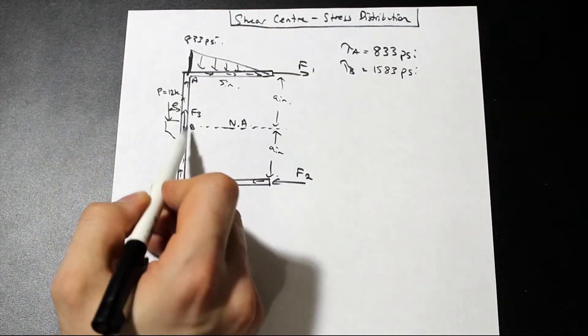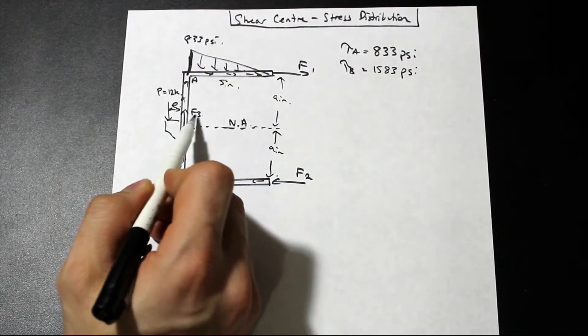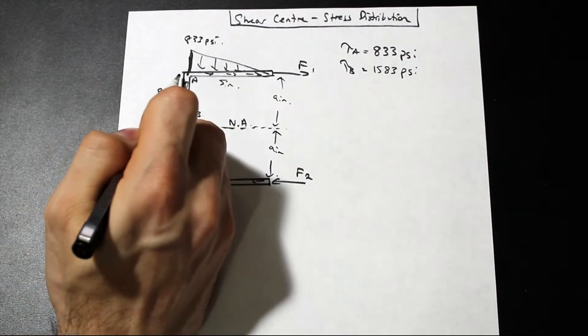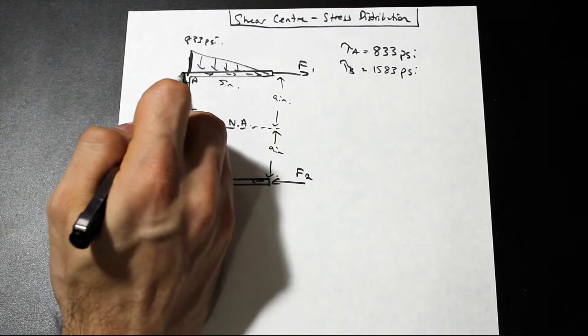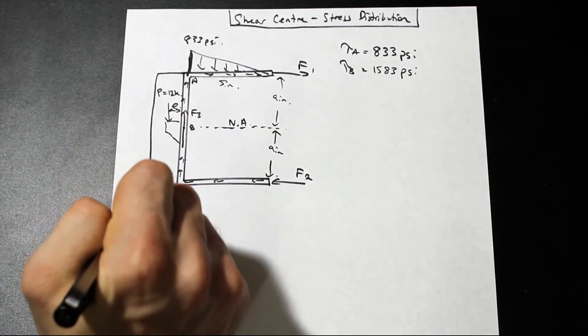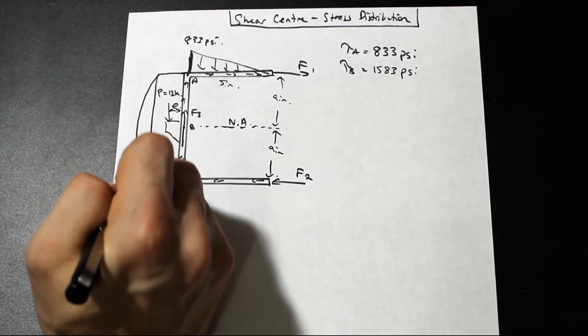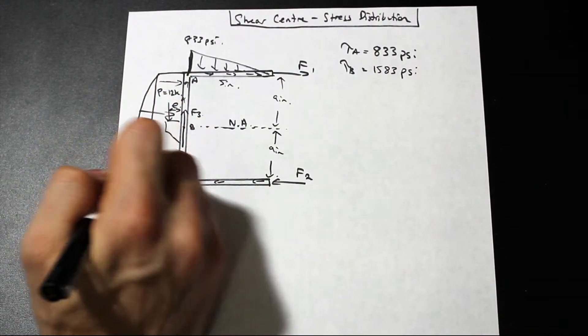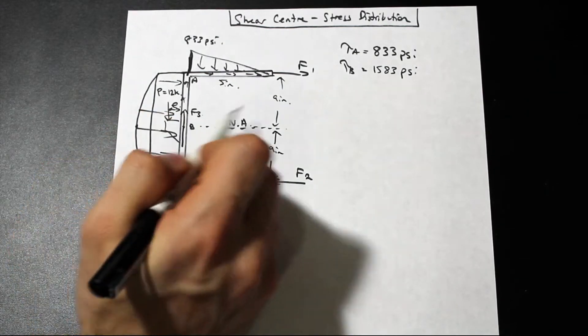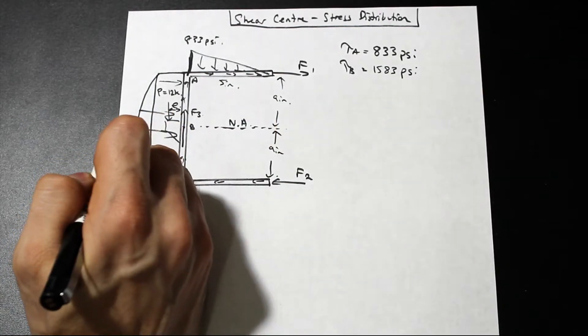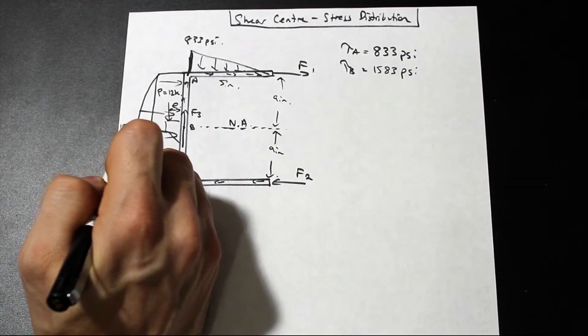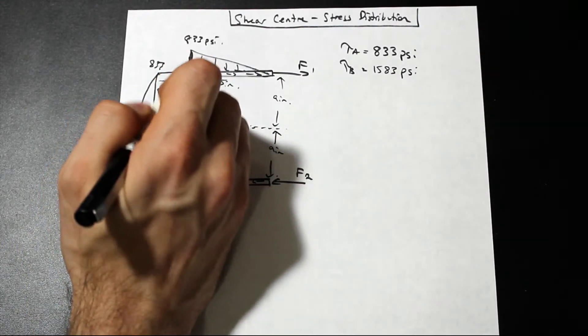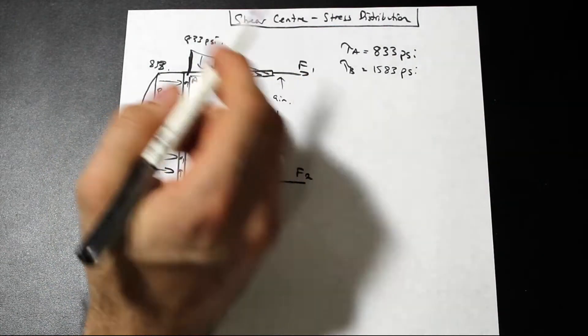Now for the web, as you'll see in this question, we have a force F3 here. And this force F3 is going to, in fact, create a parabolic distribution of stress on the web. With the maximum, and I know that's a little messy, but you get the point. At tau B here, the maximum shear stress is 583, and at this point, it is 833, exactly what it was at point A.